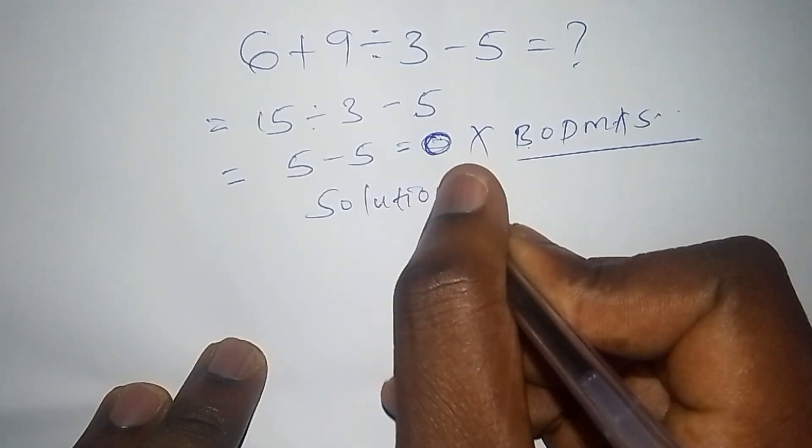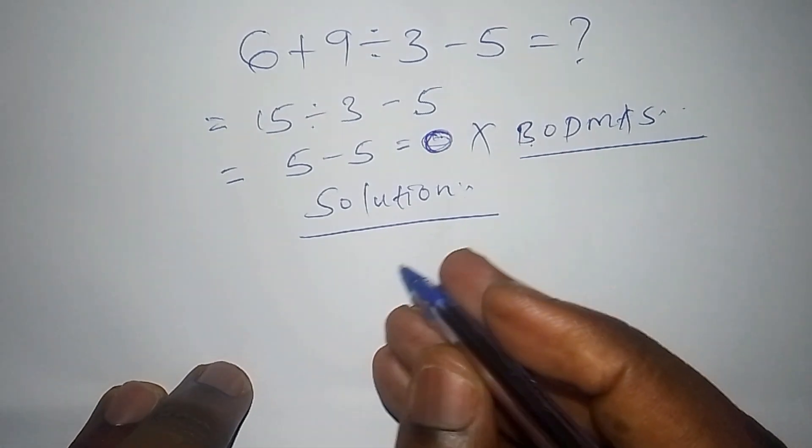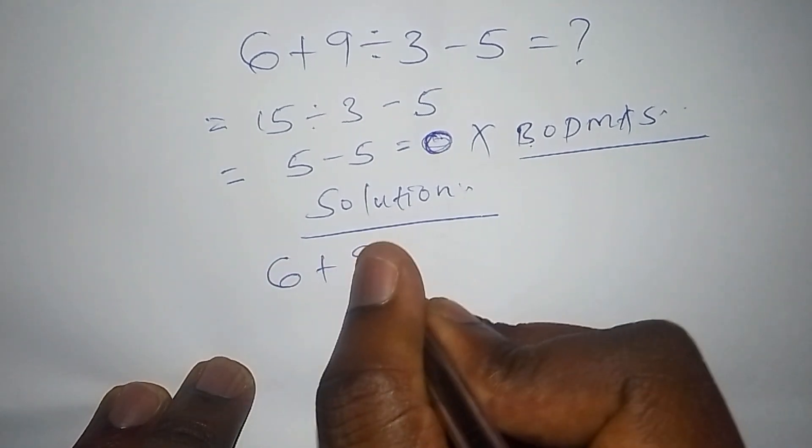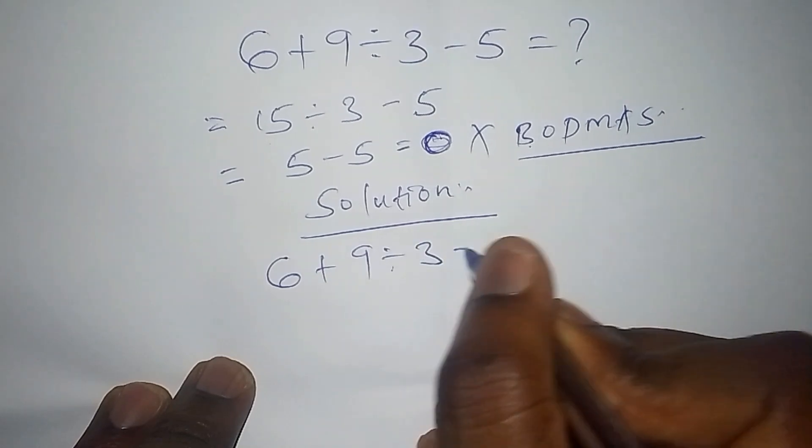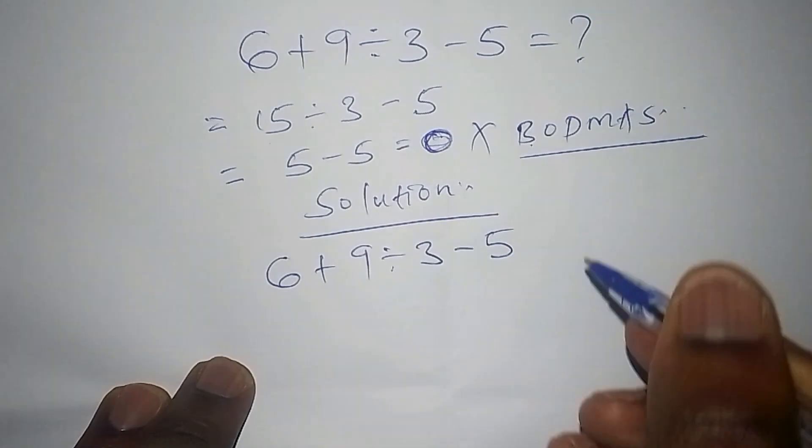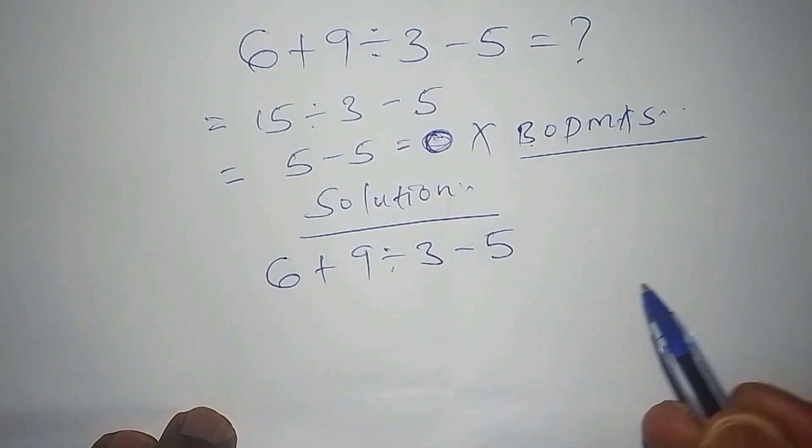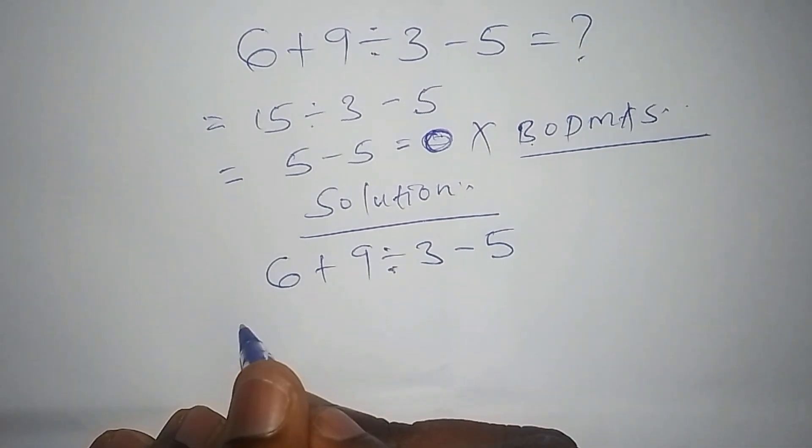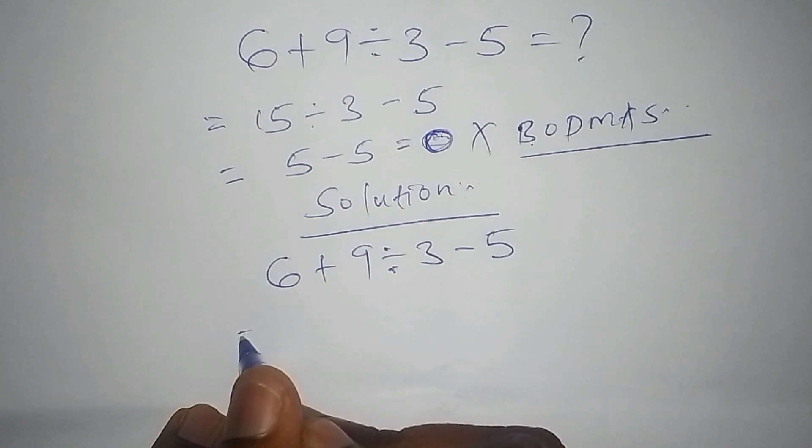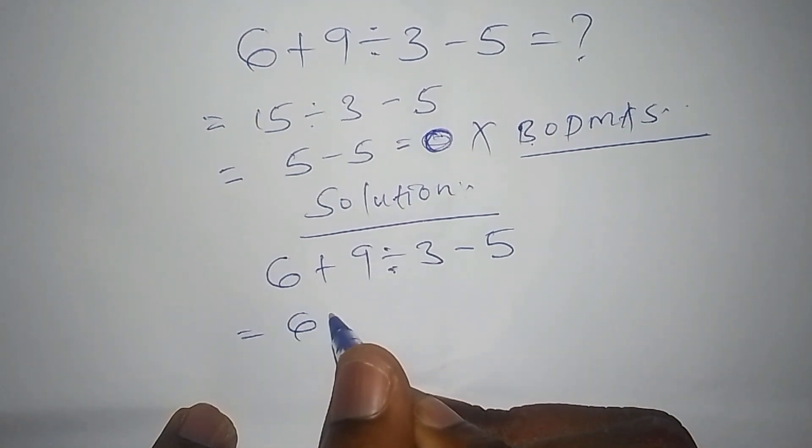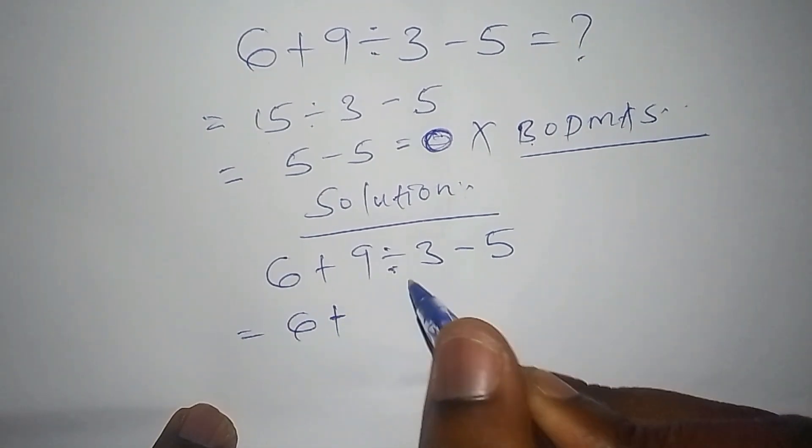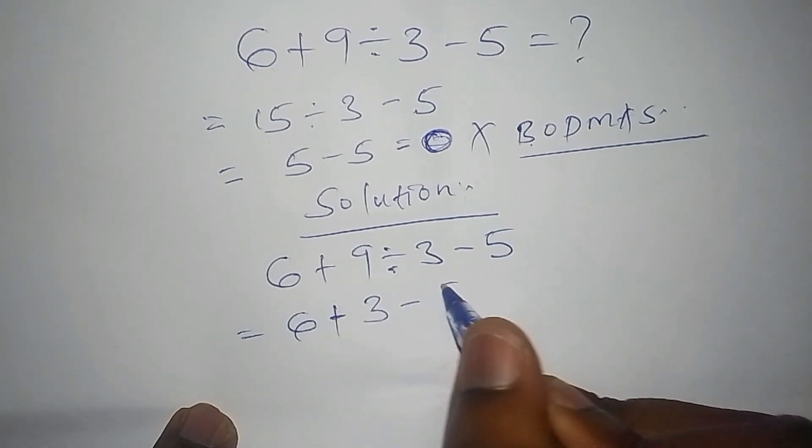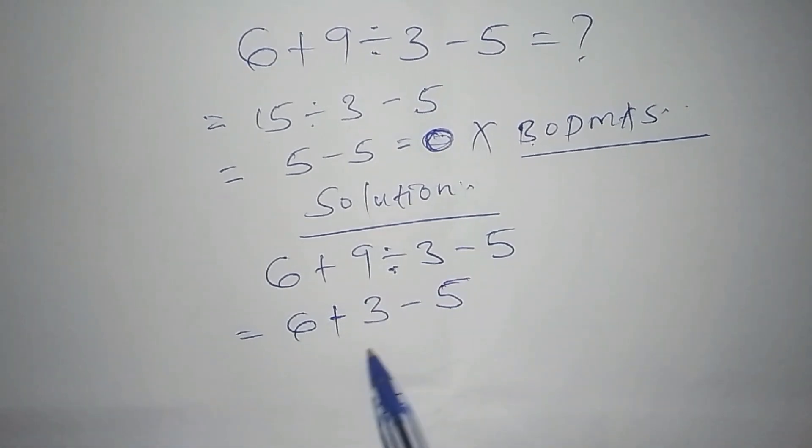Here we shall have our solution to the maths problem. We have 6 plus 9 divided by 3 minus 5. From here, you have to be very careful by first working out the division. So the first step will be: 6 plus 9 divided by 3, that is 3, then minus 5. You can see my step.